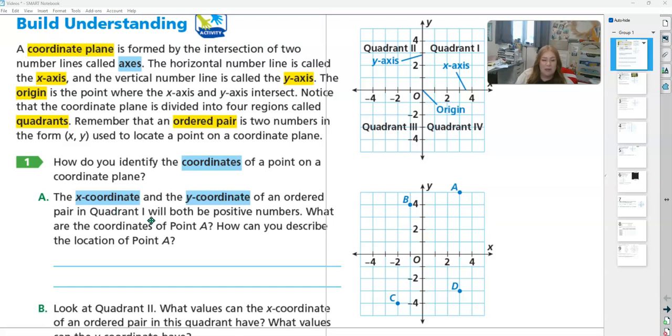So we have this ordered pair in quadrant one. They'll both be positive. So we have to go over positive, up positive. So what are the coordinates of point A? And then how can we describe it? So we are telling them how we get there and what it is. So this one goes over. We're looking for A. So we always start at the origin, over 3, up 4.